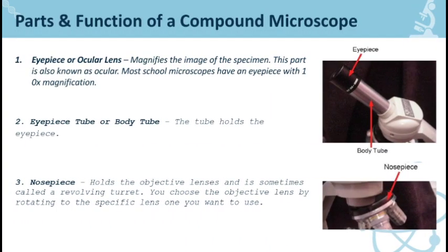Number one, we have the eyepiece or ocular lens. It magnifies the image of the specimen. Most compound microscopes have an eyepiece with 10 times magnification. As we discussed earlier, magnification is how we are able to zoom in para makita or ma-magnify ang isang maleet na organisms or an object.